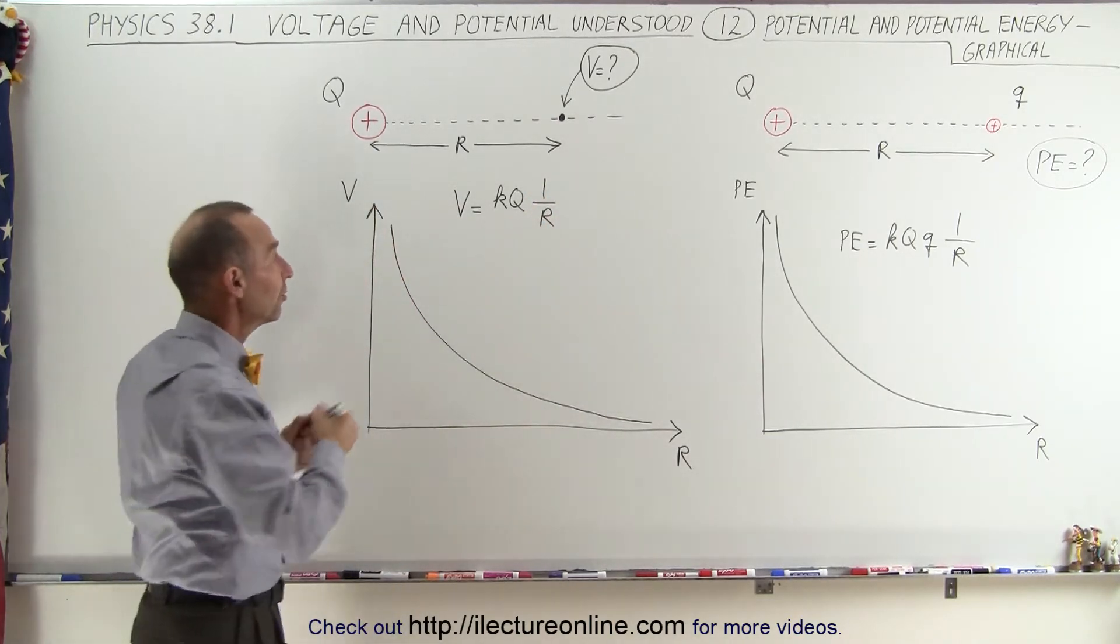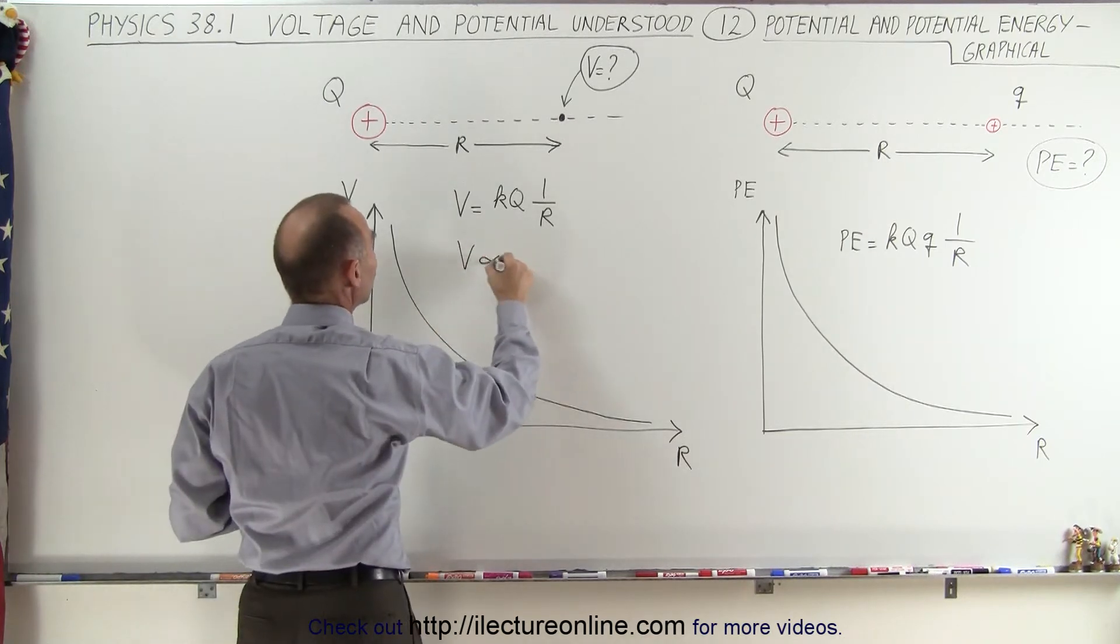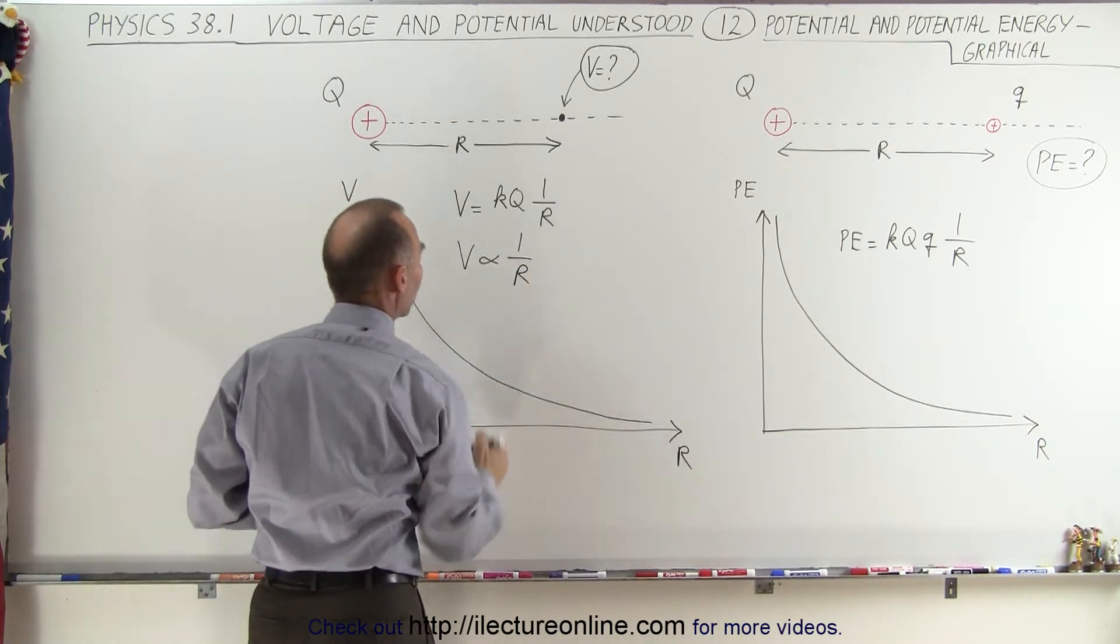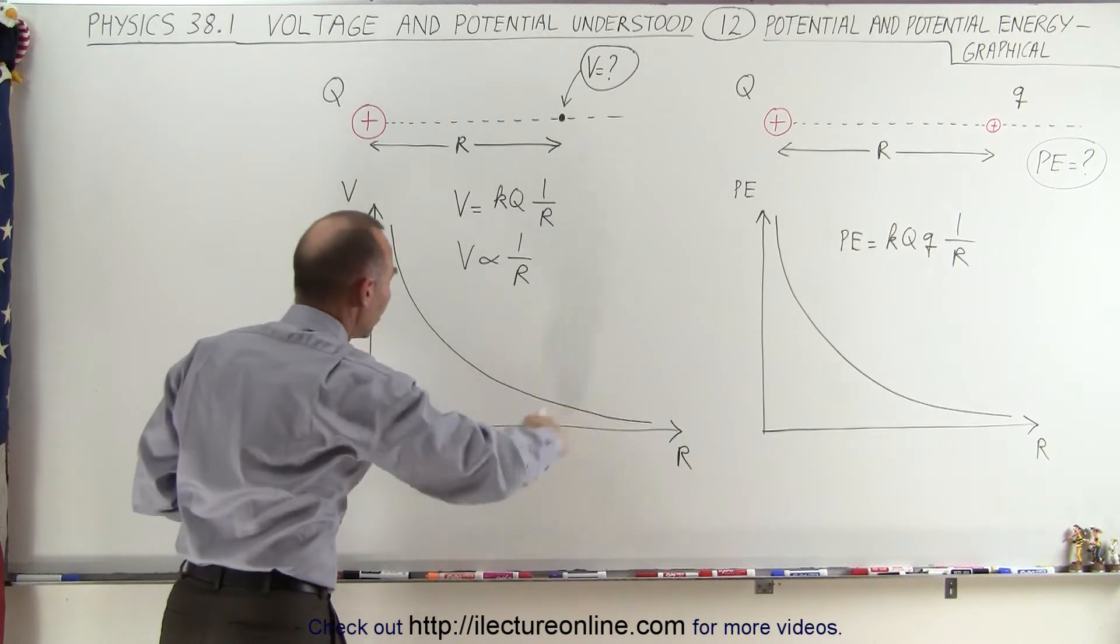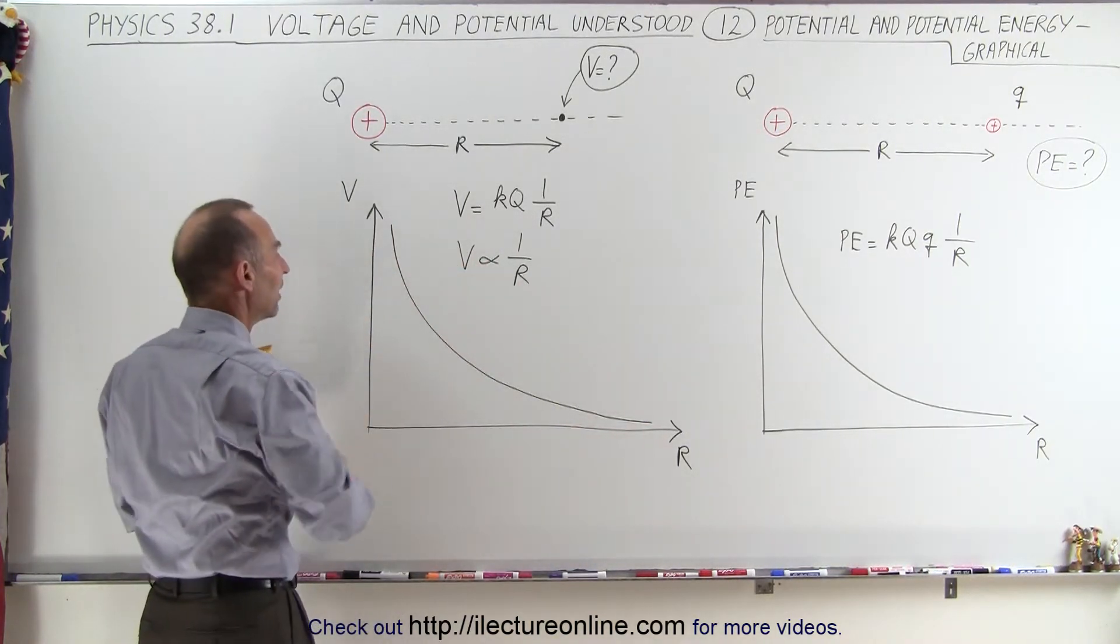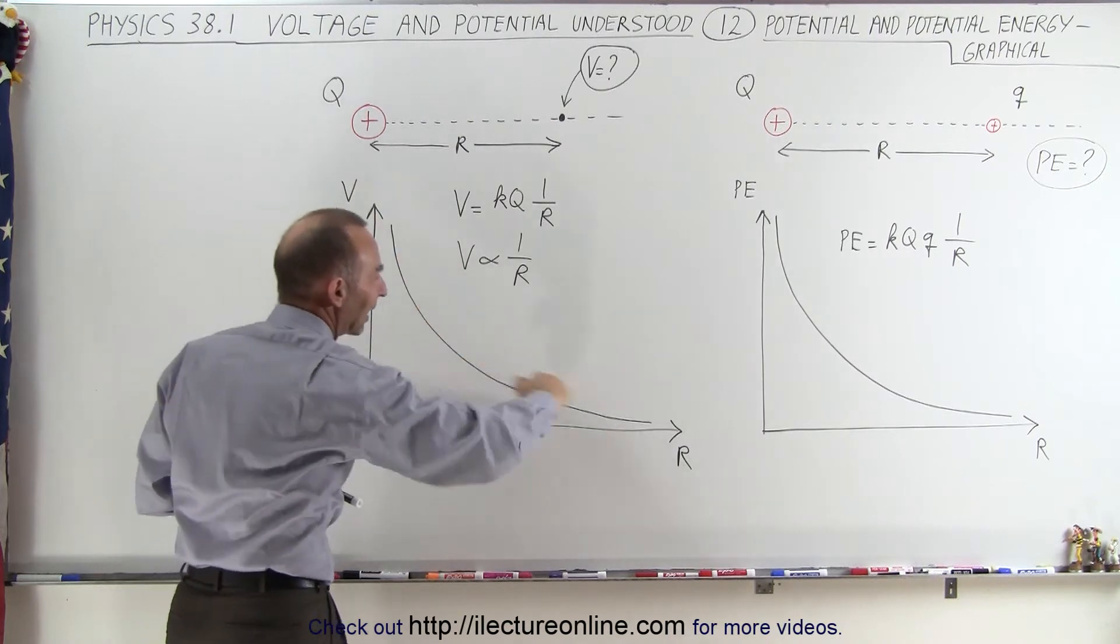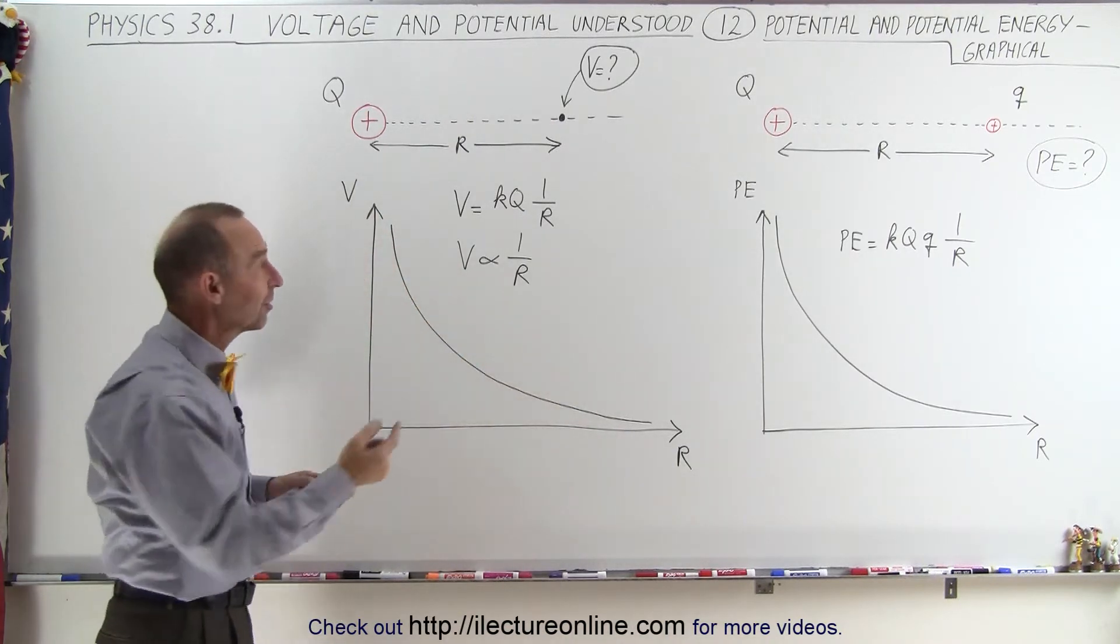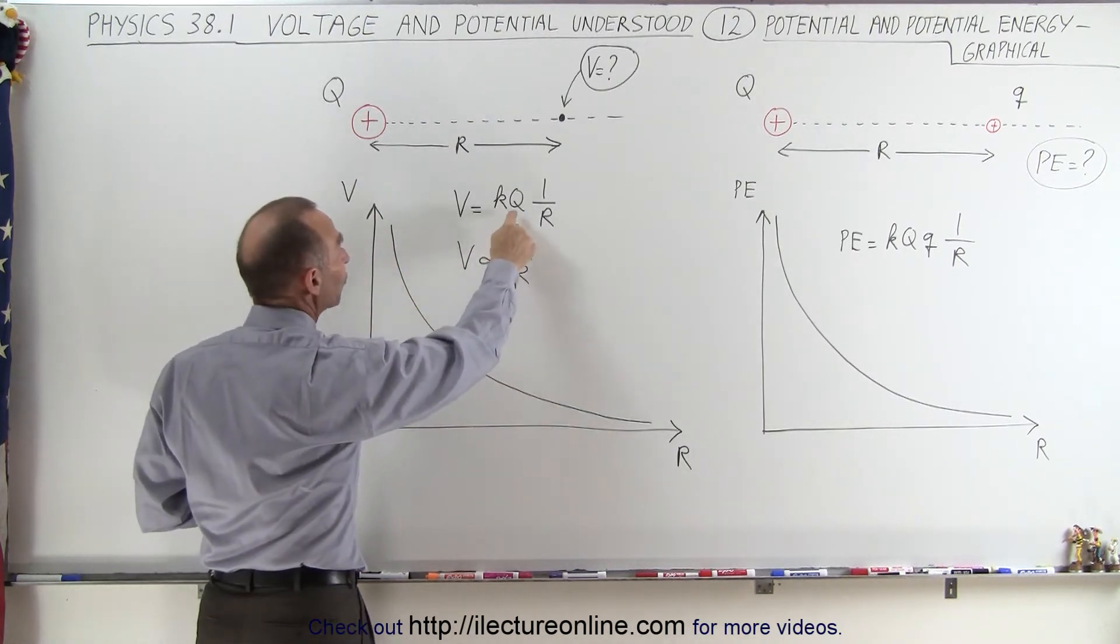In other words, the voltage in this case is proportional to 1 over the distance. And so if we draw a graph of that, we have voltage versus distance away from the charge. You can see that it has a simple 1 over X kind of curve. The only difference is that there's a constant, K times Q.